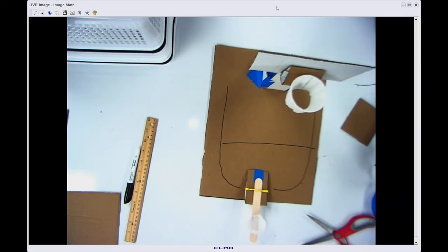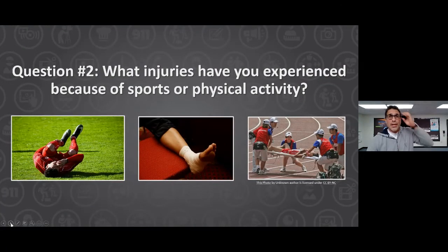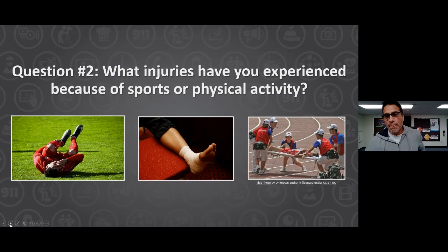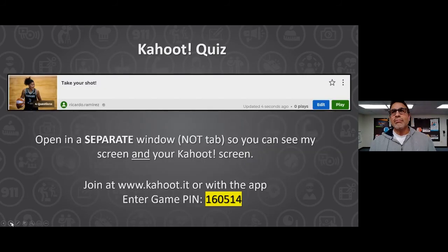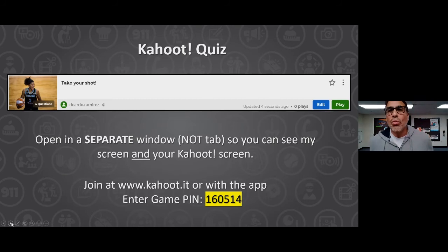That brings us to our Kahoot game. I'm going to stop presenting and switch slides. While we get the Kahoot going, let's also get some answers to question two about injuries from sports. Mr. Bruder, are you there? Before we start, switch to your Kahoot screen so people can see the code. The code is 160514 — go to kahoot.it and type in that code. Let's answer some questions and see what you've learned today!